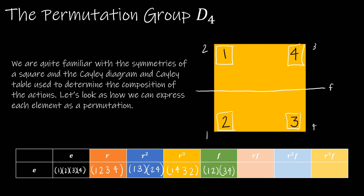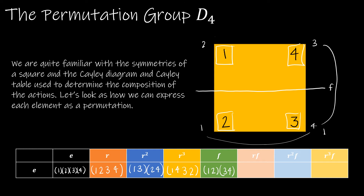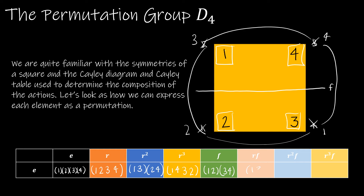Now what happens if I do RF? Be careful: function composition goes right to left, so the first thing I do is flip, then rotate 90 degrees. After the flip, one is at two's spot, two at one's, three at four's, four at three's. Then rotating 90 degrees counterclockwise: one ends up in the three position, three ends up in the one position, while two and four stay where they are. So RF = (1 3). We can verify this by composing R = (1 2 3 4) and F = (1 2)(3 4) directly and get the same result.